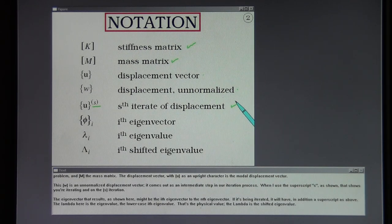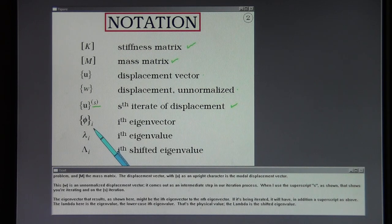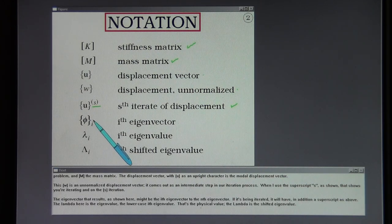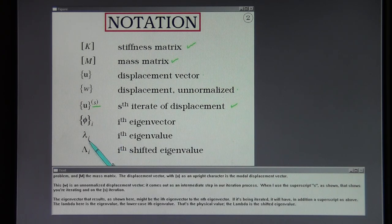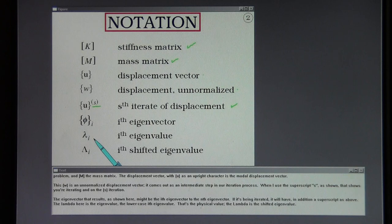The eigenvector that results might be the i-th eigenvector — for instance, the seventh eigenvector. If it's being iterated it will have in addition the superscript S. Lambda here is the lower-case i-th eigenvalue — that's the physical eigenvalue. Capital lambda is the shifted eigenvalue.